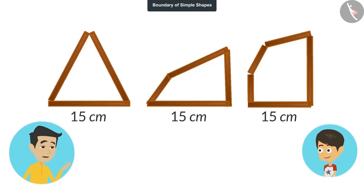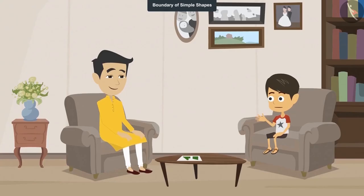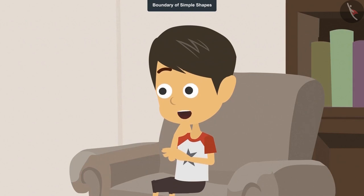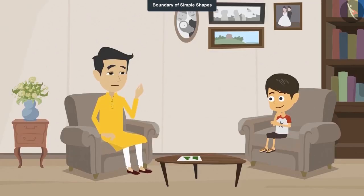You see, the shape of these three figures is different despite the fact that the length of the boundaries is the same. Now I understand that different shapes can have the same length of boundary. Apart from this, I understood one more thing.